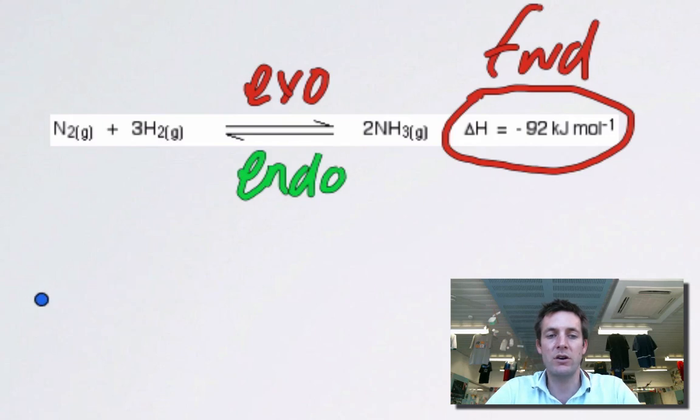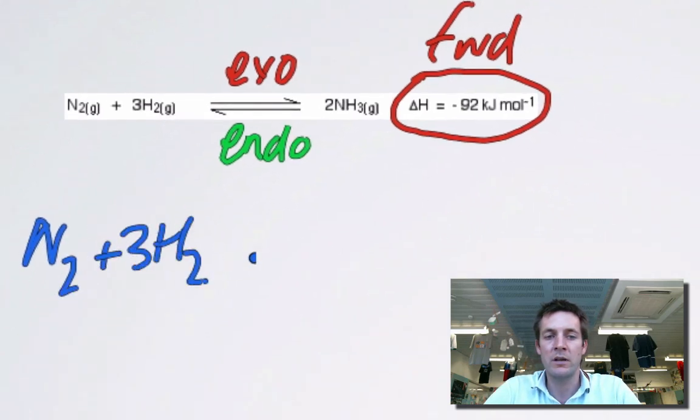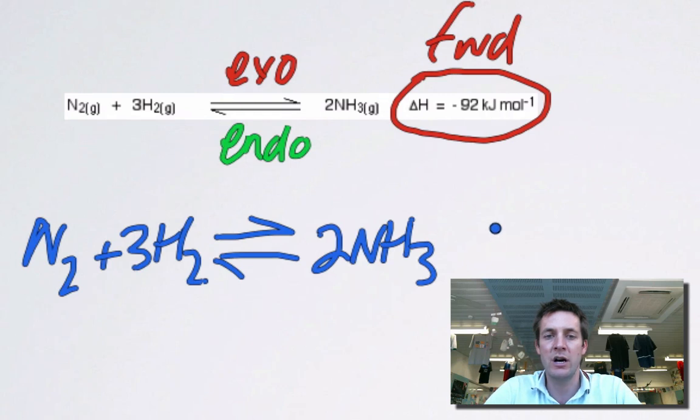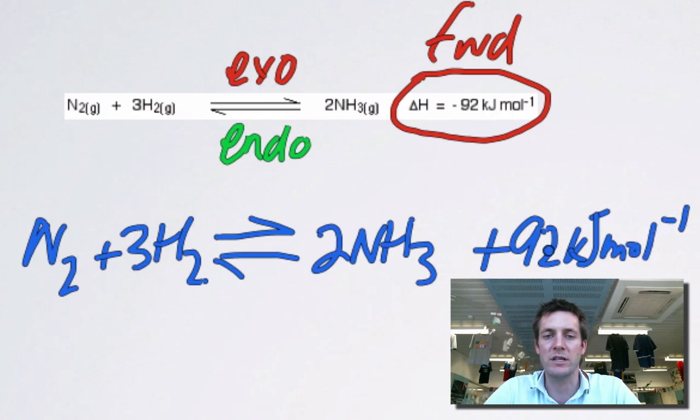There are different ways of representing this. So I could maybe write N2 plus 3H2 turns into, reversibly, 2NH3. And because this reaction is releasing heat in the forward direction, I could write plus 92 kilojoules per mole. And this is a kind of way of doing things which we sometimes see. It's a little bit confusing because it makes the enthalpy change look positive. But what they're actually trying to do here is to make this energy one of the products of this forward reaction. So in order to get the backward reaction to happen, we have to put in 92 kilojoules per mole. When the forward reaction happens, we release that amount. It's a little bit confusing. You just have to look out to see whether that delta H symbol is there or not, because if this said that delta H is equal to 92 kilojoules per mole, then that would mean that the forward reaction was endothermic. But obviously they wouldn't be able to write this for this particular process because the forward reaction is exothermic, as it happens.